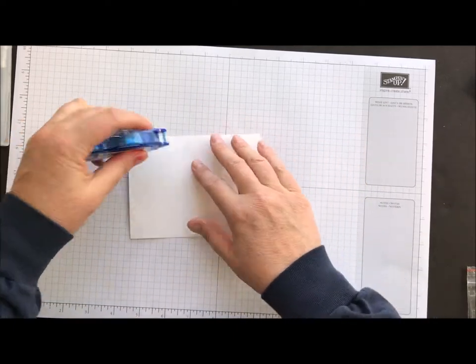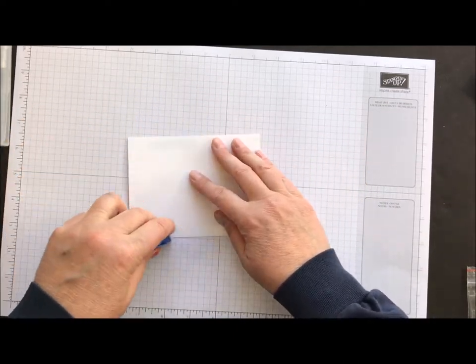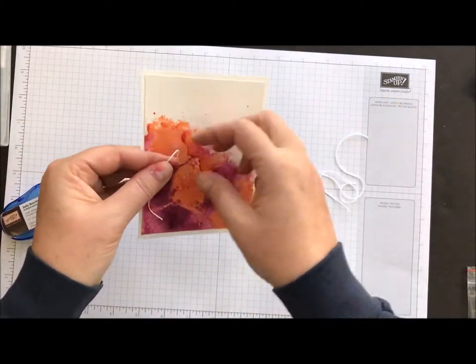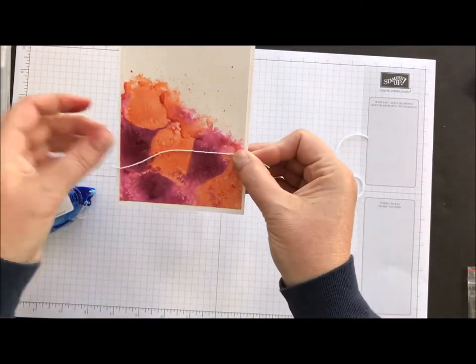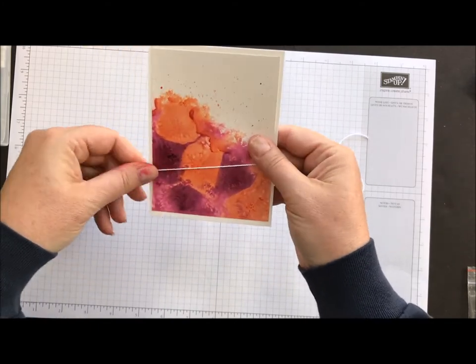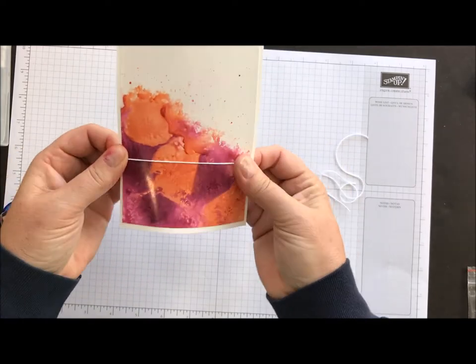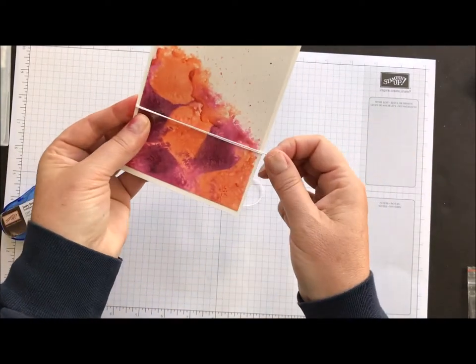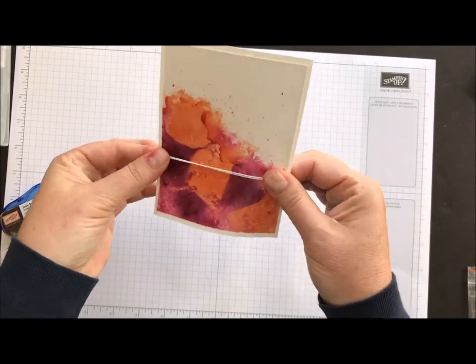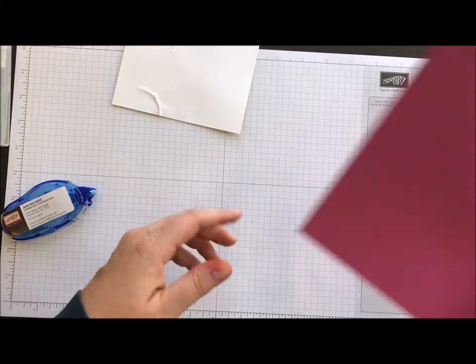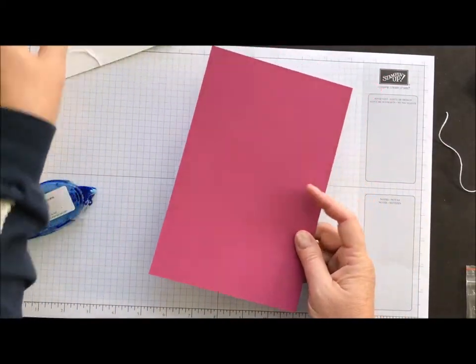Now, while I have it flipped over, I'm going to put some adhesive on the back and just use my little white Baker's twine. I'm going to tie that around here. Just tacking that in the back. And I have, I did two pieces here. It's a little bit thicker.